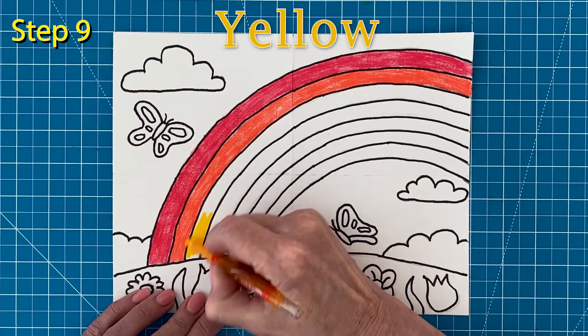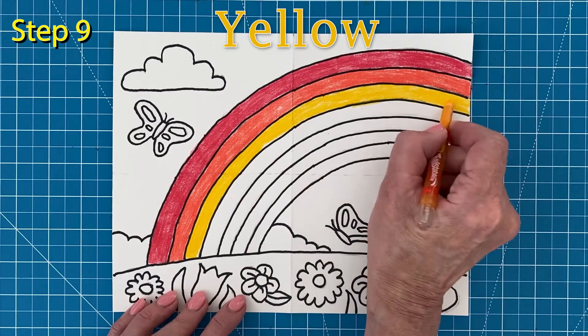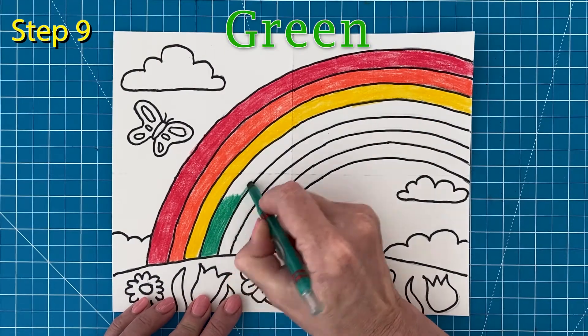Next, the letter Y starts for the color yellow. This color always needs a little extra pressure so it really shows up. Next, the letter G stands for green.